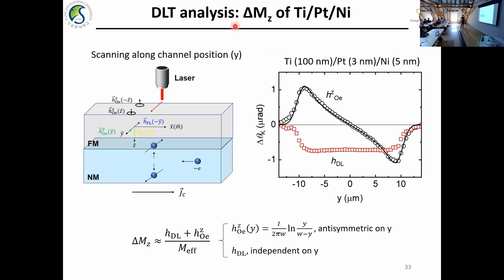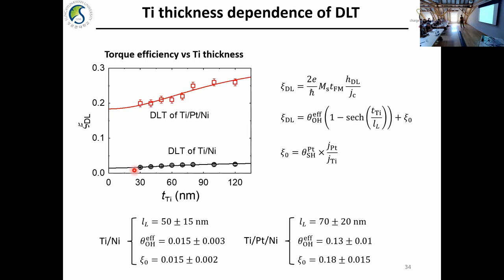After separation, I analyzed the damping-like torque from the Mz component. The Mz component has two contributions: one is the damping-like torque angle, and the other is the z-component of the Oersted field, which can be separated because the Oersted field has an anti-symmetric profile while the damping-like torque angle is a flat profile. Using this flat profile, I extracted the torque efficiency. For the Ti/ferromagnet bilayer, I found the torque efficiency is quite small due to intermixing. But when we insert the platinum barrier layer, the torque efficiency becomes very large, increasing as a function of titanium thickness. From this, I obtain two pieces of information: the orbital diffusion length of around 79 nanometers, consistent with the orbital accumulation result, and the effective orbital Hall angle of around 0.13.